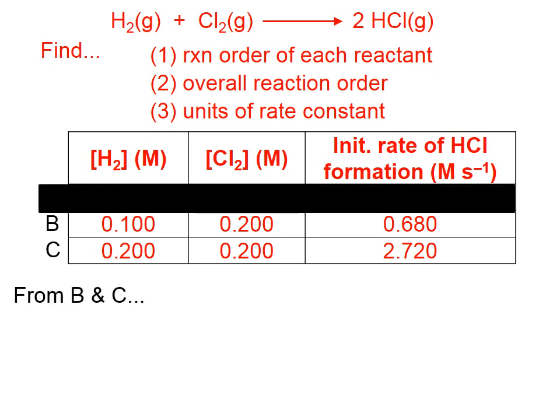What we're going to do here is figure out the reaction order for hydrogen. We want to take two of the experiments that have hydrogen amounts being different, but the other reactant being the same. So in other words, if there's any difference in the rate between reactions B and C, it must be because we changed the hydrogen concentration.